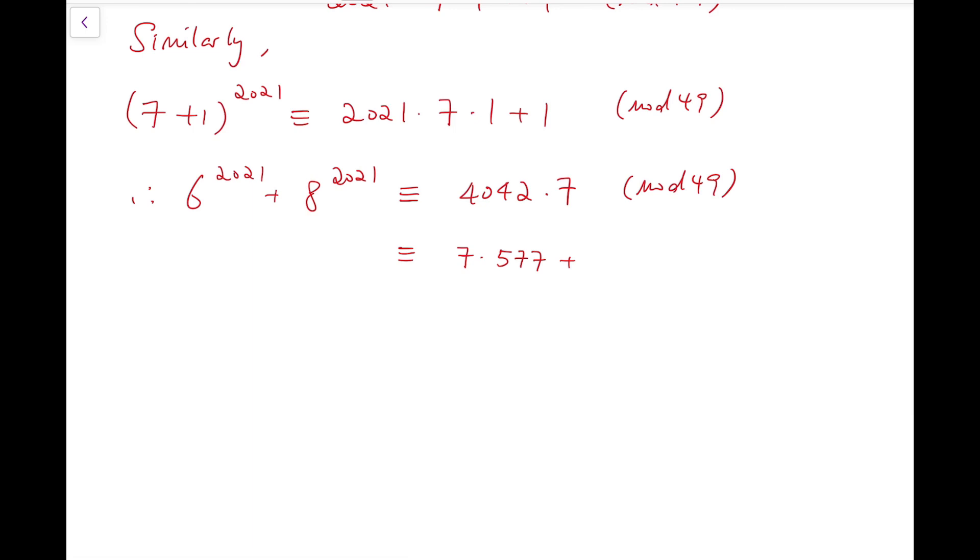I can rewrite 4042 as 7 times 577 plus 3, all multiplied by 7. And we know that when these two numbers are multiplied together, it's a multiple of 49. So what remains is just the remainder, which is 21. So the answer is 21.